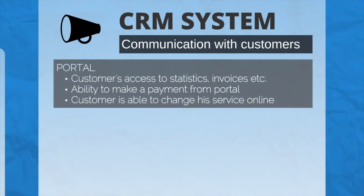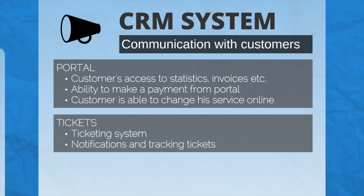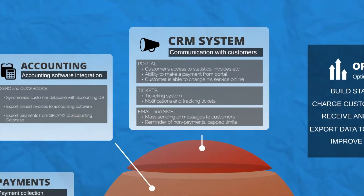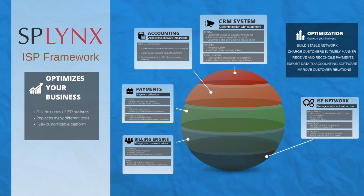The last part is improving CRM communication with customers. We provide a portal where each customer can access their statistics and invoices and make payments. Customers can also create a ticket, see notifications from the administrator, and email and SMS communication is a must. This is the Splings framework structure — thank you for your time.